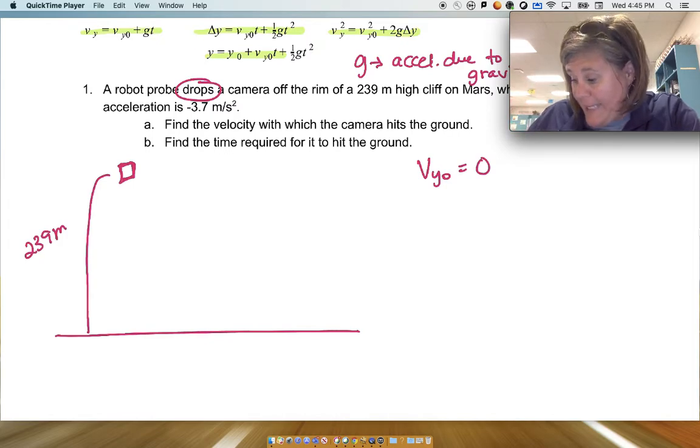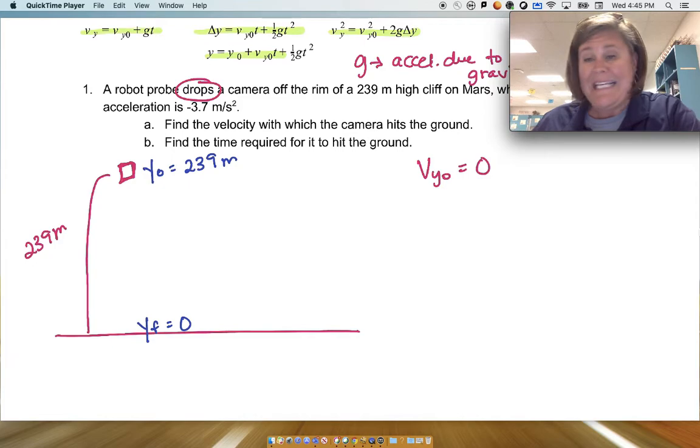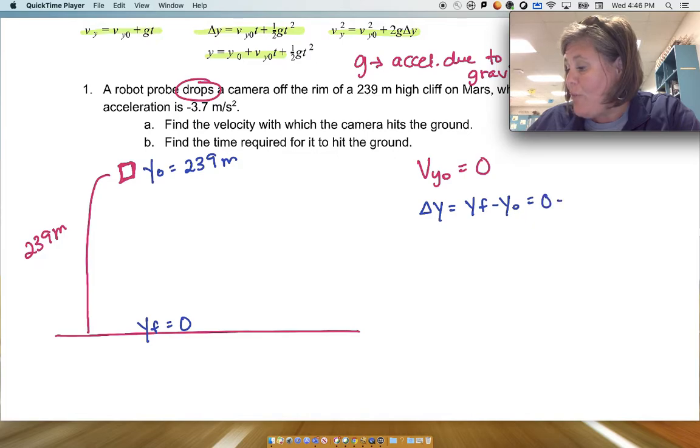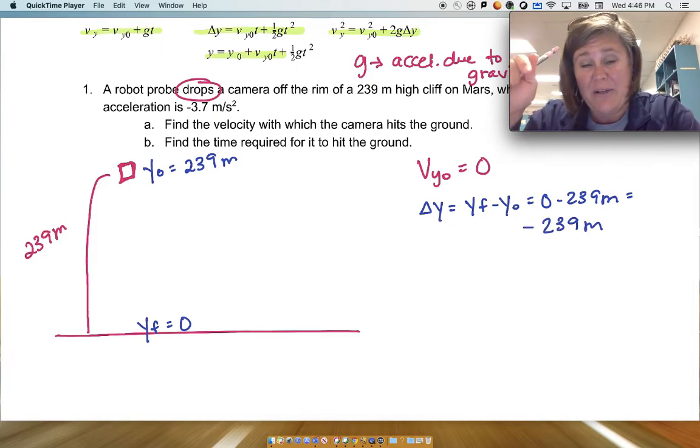I normally say that the initial position is going to be 239 meters and that the ground, which is the final position of the camera, is zero. If you do it that way, delta Y, which is the final position minus the initial position, is going to be 0 minus 239 meters, which is -239 meters.